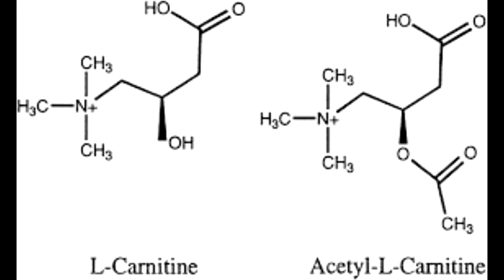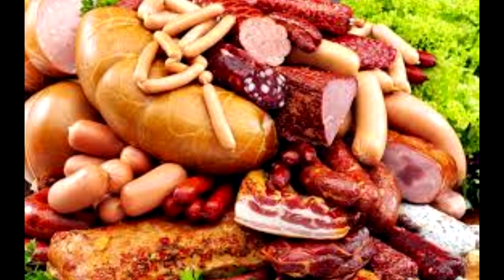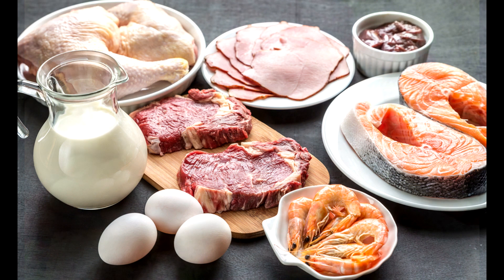Foods that contain these molecules — L-carnitine and acetyl L-carnitine — are produced and metabolized by animals that process those nutrients in their bodies, which we then consume through their flesh and animal products. L-carnitine is found in beef, lamb, pork, wild game, cow's and sheep's milk, dairy products, and fish of any kind.